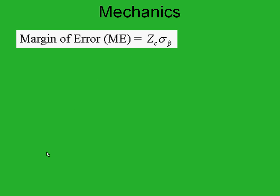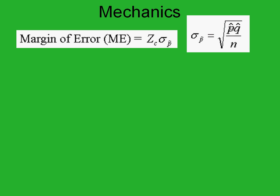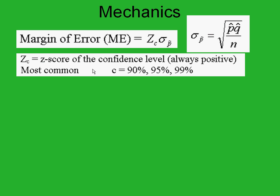Let's run through the mechanics pretty quickly. Here's how we're going to make this interval. We're going to calculate the margin of error: the z-score of our confidence level times the standard deviation. The standard deviation is not new, except we're using p-hat and q-hat because that's all we have — you take p-hat times q-hat divided by n, all under the square root. What about the z-score? The z-score is based on the level of confidence you pick. You probably always want to be as confident as you can, but the problem with being 99 percent confident is your interval is going to be pretty wide.